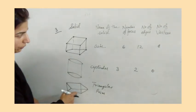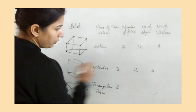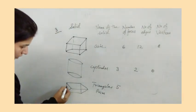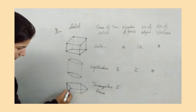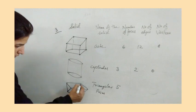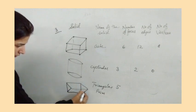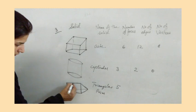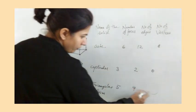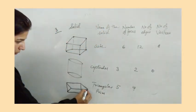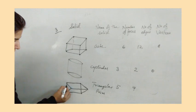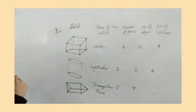So we have five faces. And how many edges? One, two, three, four, five, six, seven, eight, and nine edges.